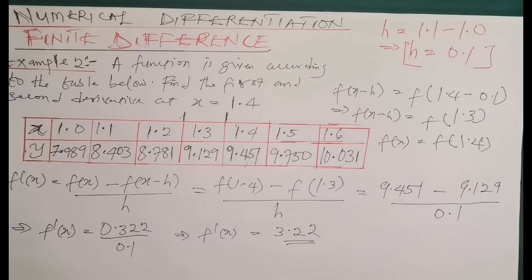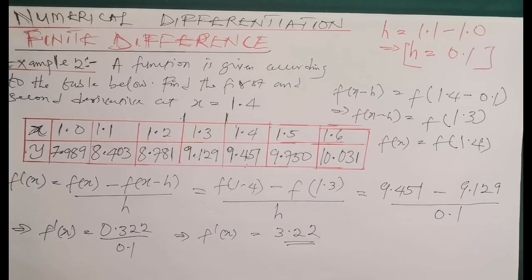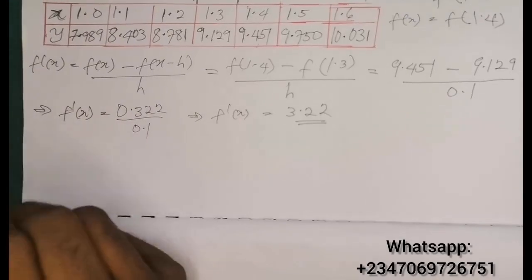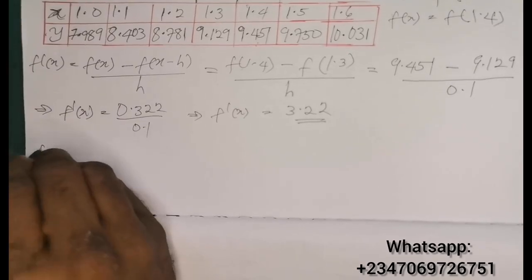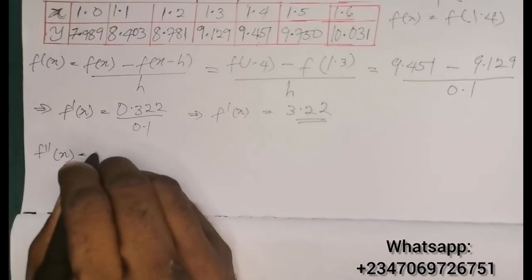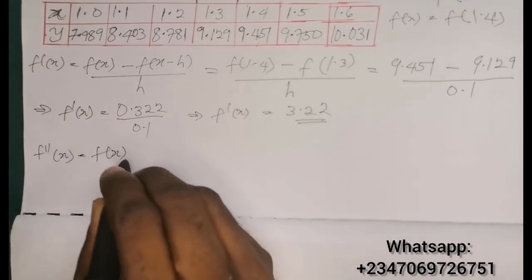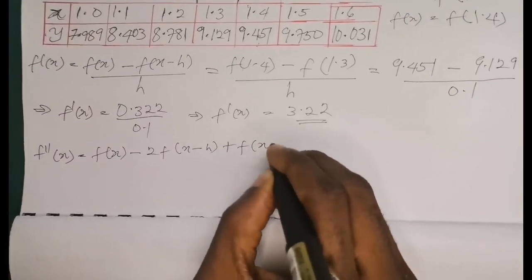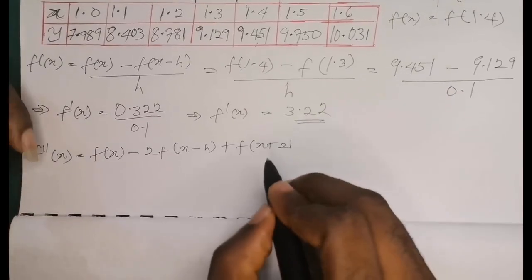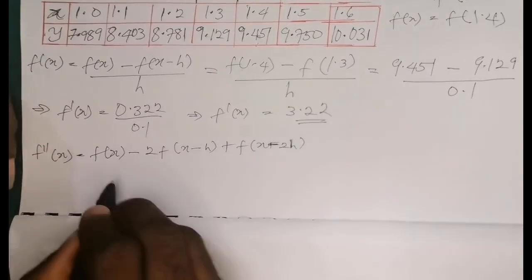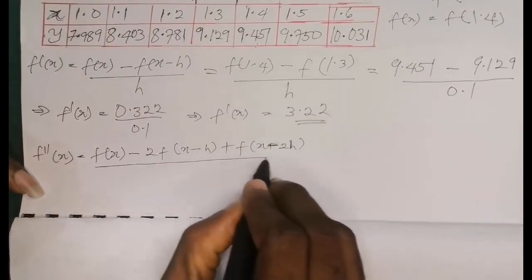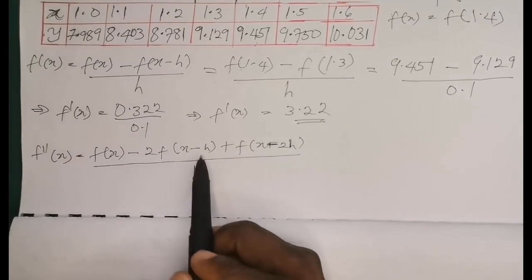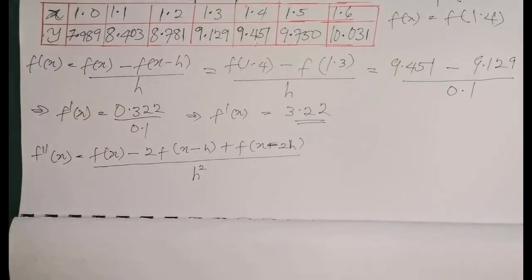For the second derivative using the backward difference method, the formula is: f double prime of x equals f(x) minus 2·f(x minus h) plus f(x minus 2h), all over h squared. We already know f(x minus h); we now need to find f(x minus 2h).